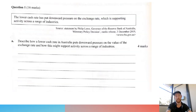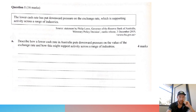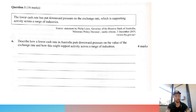So question one. This question is weird because the prompt is in the question anyway, so using the prompt isn't really as relevant because the question is right there and has all of it in it. The question asks: describe how a low cash rate in Australia puts downward pressure on the value of the exchange rate and how this might support activity across a range of industries. Essentially, they're asking you to talk about the exchange rate channel and how that's going to have an impact.